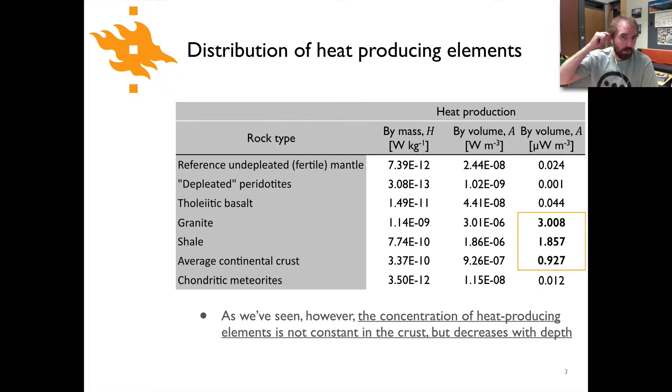As we mentioned in the earlier lectures, we see a number of things when we look at the variations of heat producing elements within different rock types in the earth. First, the concentration of heat producing elements is much higher in rocks in the upper crust. Granites and shales have higher concentrations of heat producing elements than more mafic rock types such as basalts or depleted peridotites.